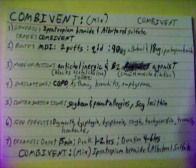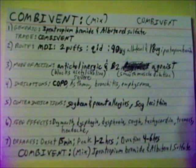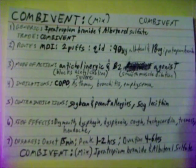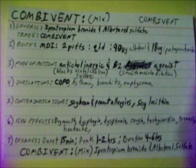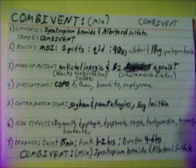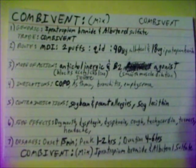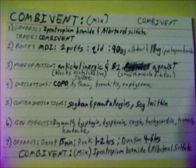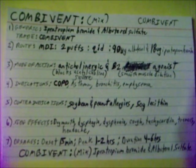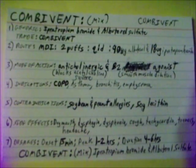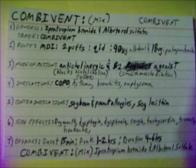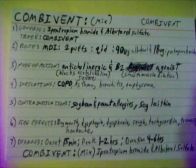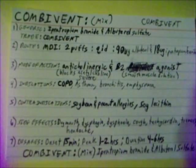Mode of action of Combivent: an anticholinergic which blocks acetylcholine, and a B2 agonist which causes smooth muscle dilation of breathing muscles. Indications are COPD, severe asthma, bronchitis, and emphysema.